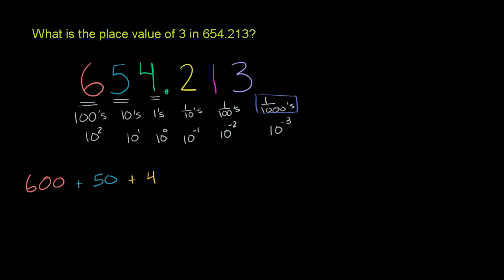Plus 4 ones, now the 4 is in that other color, plus 2 tenths, plus 1 hundredth, plus 3 thousandths, plus 3 over 1, 2, 3 thousandths.